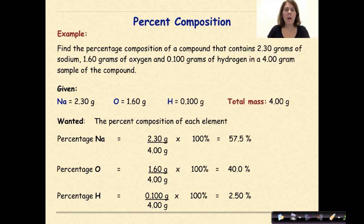Let's look at an example of how to calculate percent composition. Find the percent composition of a compound that contains 2.3 grams of sodium, 1.6 grams of oxygen, and 0.1 grams of hydrogen in a 4 gram sample of the compound.